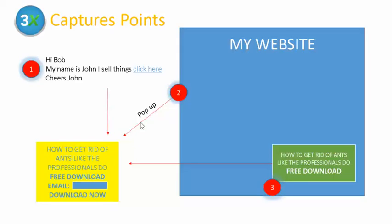Or, if someone's on your website and after six seconds they leave, it will pop up: 'How to get rid of ants like the professionals do — get your free download.' This is capturing what they call exit traffic — people that were going to leave your website and give you nothing, but now you're capturing them. So you're getting them three ways: they're reading articles and content on your site, you can have opt-in badges throughout the front of your website, and if they leave too soon or stay for a while, they'll see the pop-up. It's like having a fishnet and a spear gun all in one — you're going to capture them one way or the other.